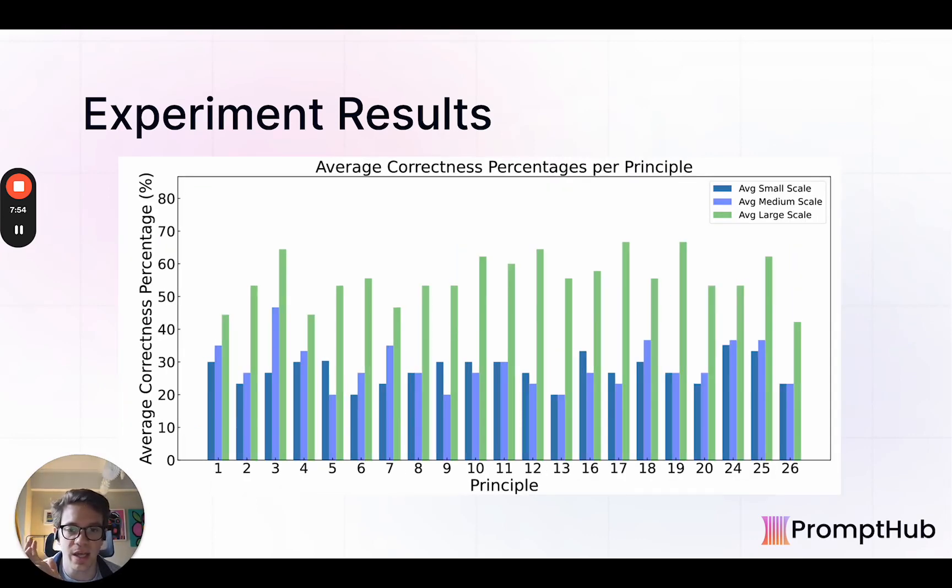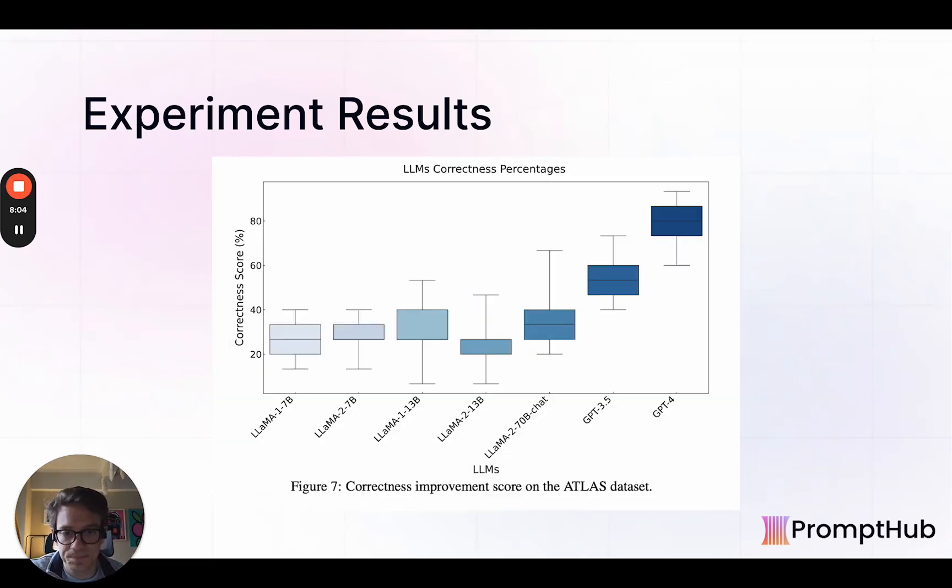Again, I think the most interesting thing here is seeing the improvement on the large-scale models is much, much higher for the correctness percentage as well. So here's the list of all the models they looked at. Again, you can see kind of what we've just been saying, the larger the model, the bigger improvements the principles have on average.